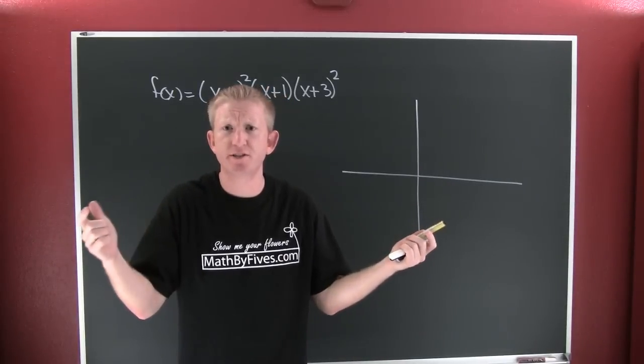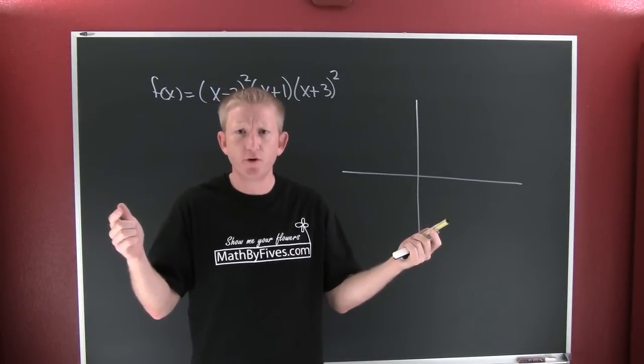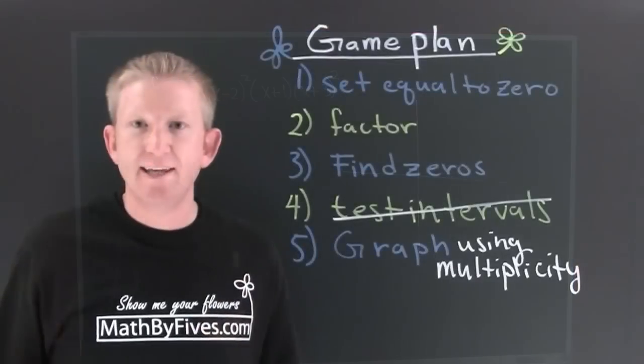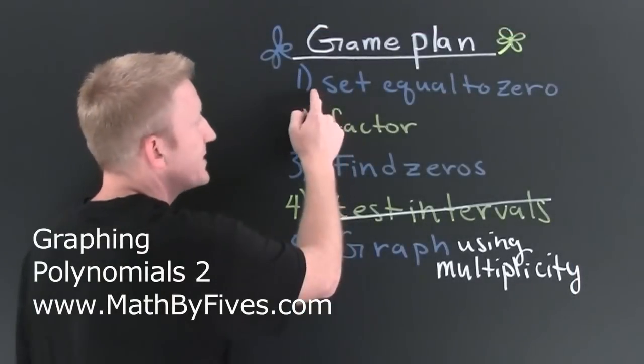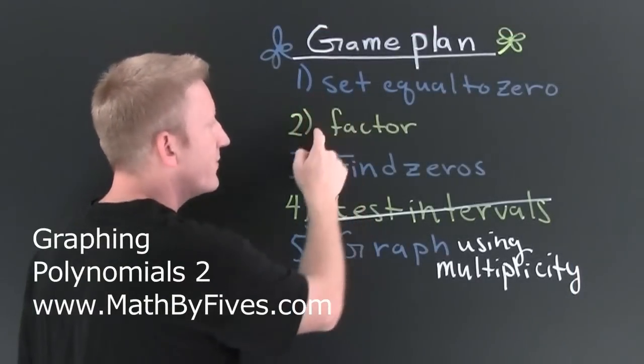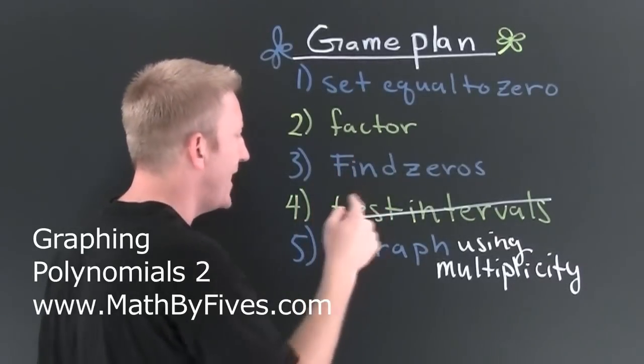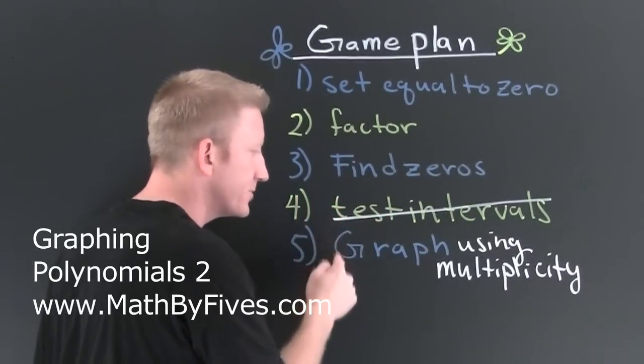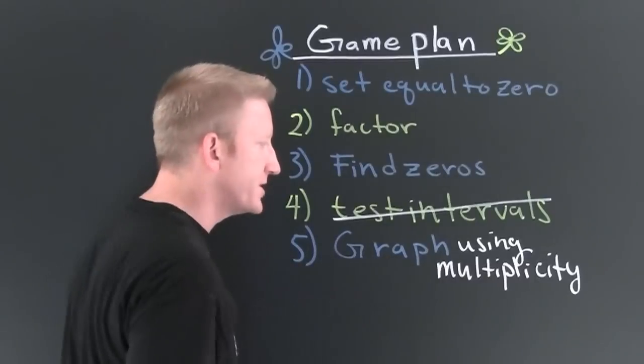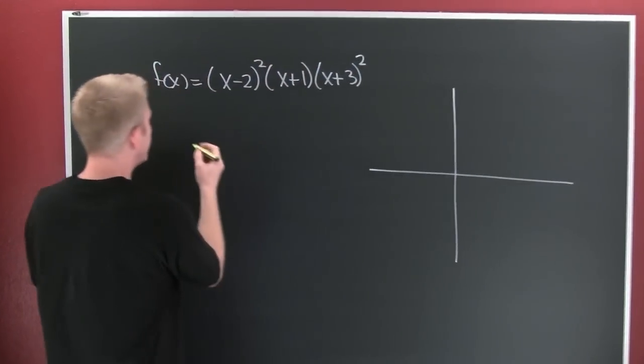This time I've given you a polynomial that's already in factored form. So we get a game plan. We're going to set the polynomial equal to zero, factor if possible, find the zeros of that polynomial, and this time instead of testing the intervals we're going to graph using multiplicity.